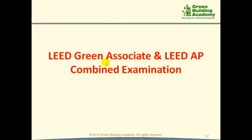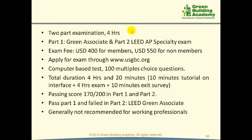There is also an option to take the LEED Green Associate and LEED AP examinations together in a combined four-hour exam: Part 1 is the LEED Green Associate examination and Part 2 is the LEED AP Specialty examination. The exam fee is $400 for members and $550 for non-members. Each part has 100 multiple choice and multiple response questions, and the passing score is 170 out of 200 for both parts. If you pass Part 1 but fail Part 2, you can still earn the LEED Green Associate credential. We generally do not recommend the combined examination for working professionals.